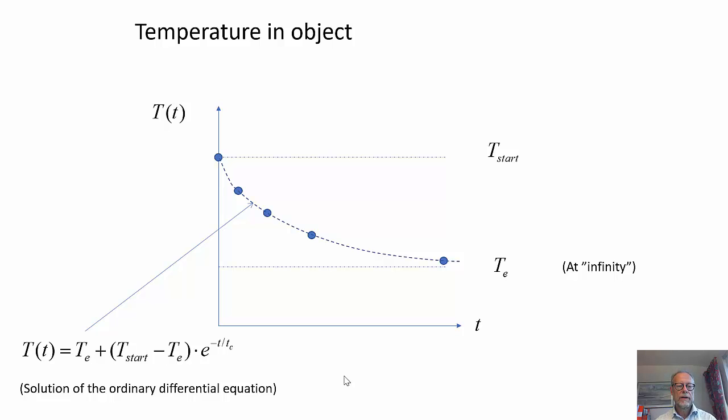If we are solving the ordinary differential equation we saw on the last slide, we get this solution. So it's an exponential decay starting at the start temperature and slowly but surely the temperature is reaching the surrounding temperature.